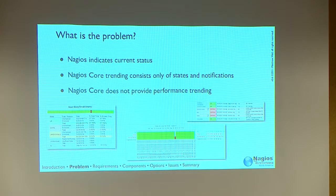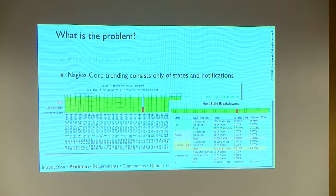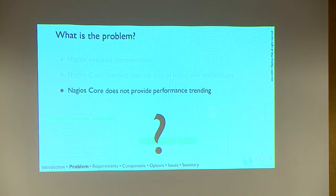So why is graphing and trending an issue? Nagios does a great job of indicating current status — it tells you what's up and what's down. But when you look at the trending built into Nagios Core, trending consists of when you had failures and when you didn't. It doesn't tell you anything about the performance data — how hot did things get, what were the actual levels involved? It's just an on-and-off kind of thing showing warning and critical states. Nagios XI has some graphing with PNP for Nagios built in, but Nagios Core trending doesn't expose performance data.